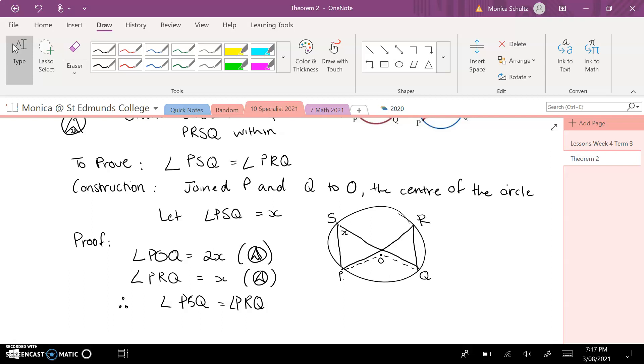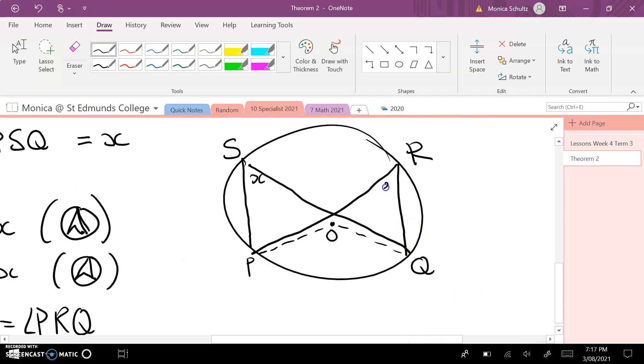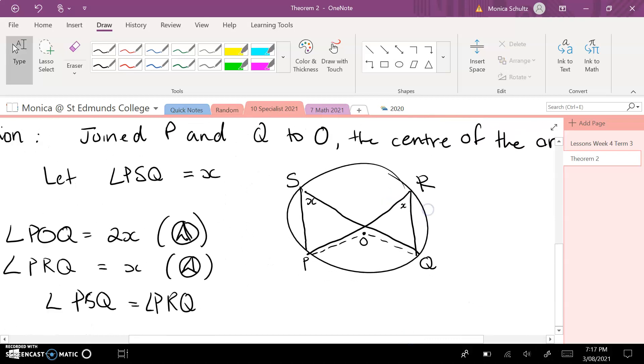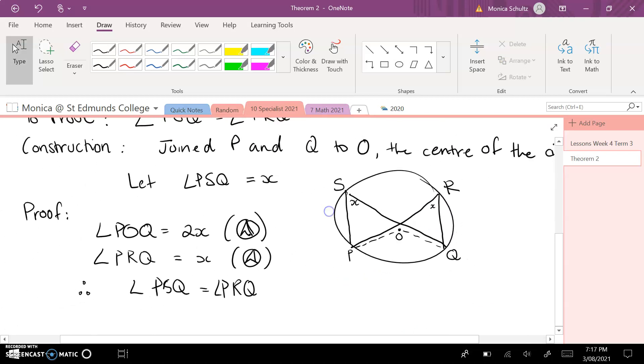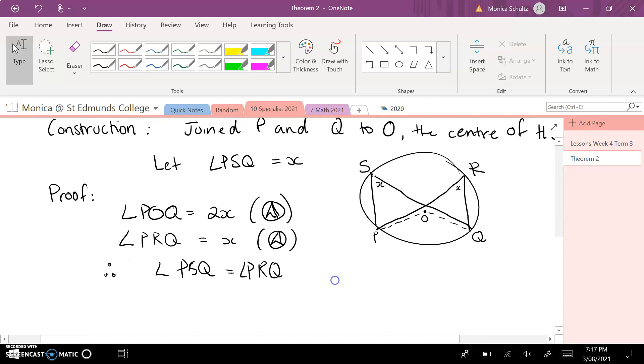PRQ is also connected to the angle of POQ, so that would make this angle up here X. And in brackets next to both of them, I'm going to write the symbol for theorem 1.